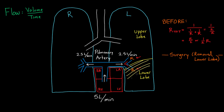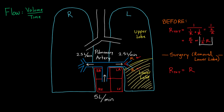After the surgery, the lower lobe is removed, so that branch is now gone. Recalculating R_total, it's simply R — just whatever's left. So resistance went from one-half R to R, meaning it doubled. By removing the lower lobe, resistance on the left side went much higher. With five liters per minute still coming in but extra resistance on the left side, more blood is going to flow toward the right lung instead.